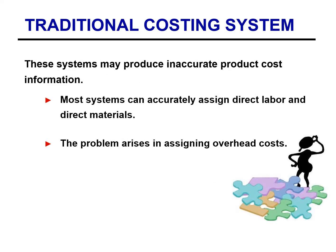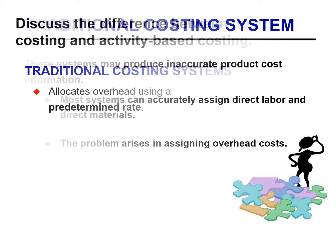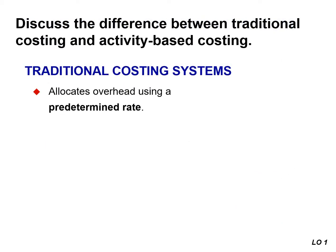Most systems can accurately assign both direct labor and direct materials. The problem is the assumption that machine or direct labor hours or direct labor costs cause or drive all the manufacturing overhead costs. Often, the most difficult part of computing an accurate unit cost is determining the proper amount of overhead cost to assign to each product, service, or job.